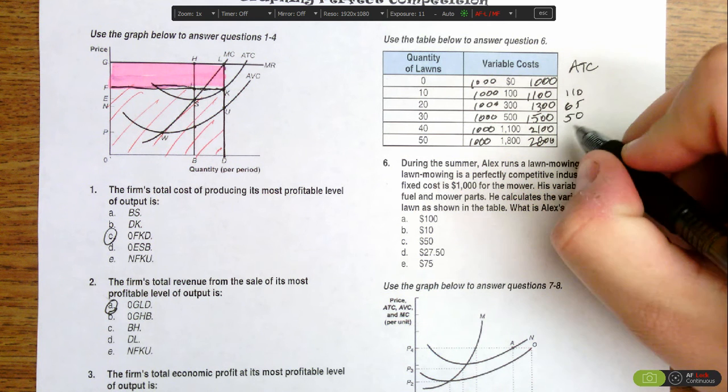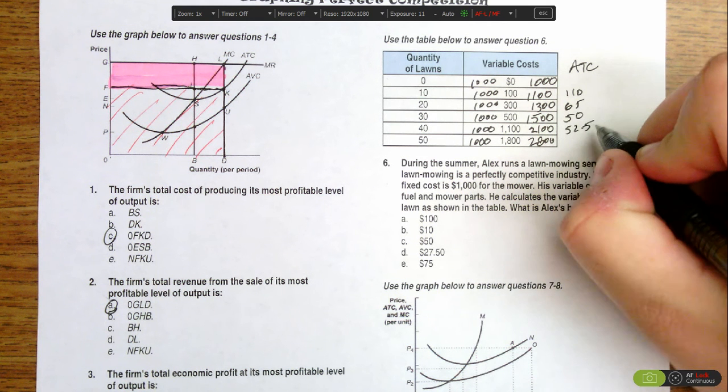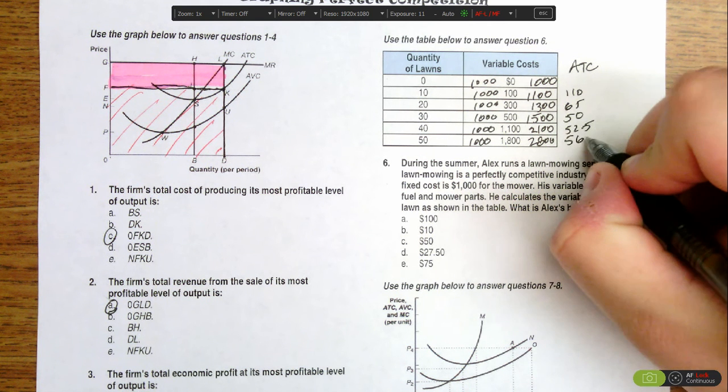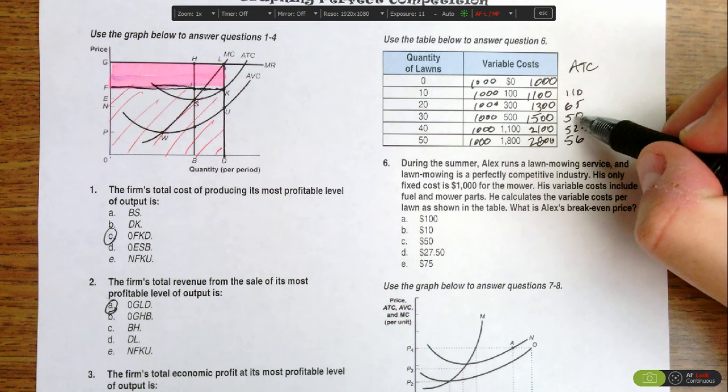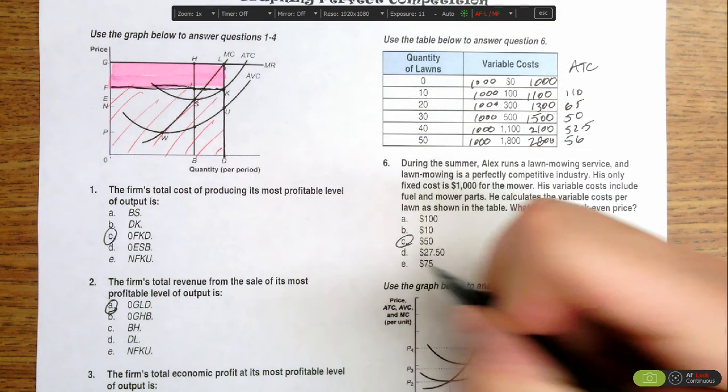For 30 lawns, the average total cost is $50, $52.50 for 40 lawns, and $56 for 50 lawns. So the minimum point of the average total cost curve is $50, which is the break-even price for Alex's lawn service.